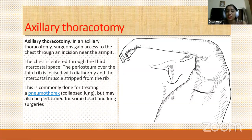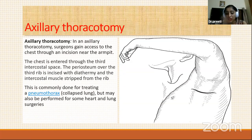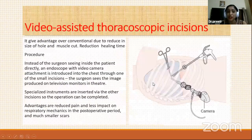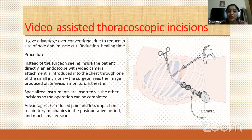Axillary thoracotomy is performed near the armpit through the third intercostal space. Its main advantage is that it provides excellent access to the pleura and is very commonly used for treating pneumothorax. Some cardiac and lung surgeries other than pneumothorax can also be approached through this incision.